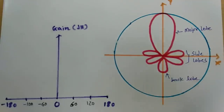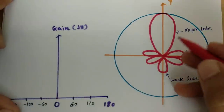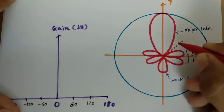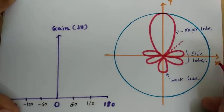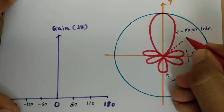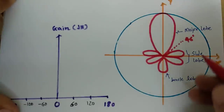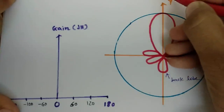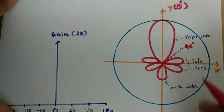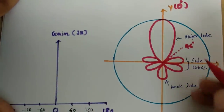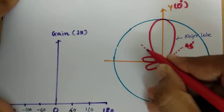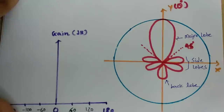Now if you see this major lobe, it has radiation with respect to an angle where the x-axis and y-axis meet. It is making a 45 degree angle with respect to the x-axis, and the angle at the y-axis is considered as 0 degree. So the angle with respect to the y-axis is 0 degree, and this is 45 degree on both sides of the major lobe.